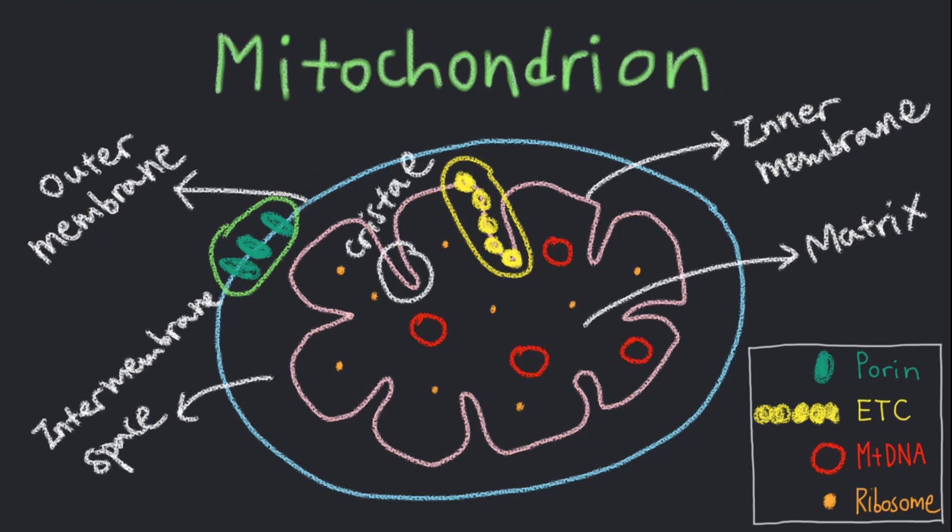The matrix contains two-thirds of the total proteins in a mitochondrion. The matrix also contains several copies of mitochondrial DNA.